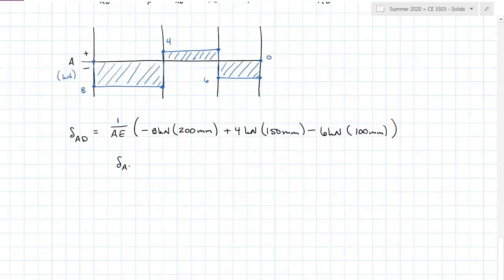My deflection A to D equals negative 1600 kilonewton millimeters all over my area and modulus of elasticity. My area is pi over 4 times 15 millimeters squared—the cross-sectional area perpendicular to that axial force. My modulus of elasticity is 200 gigapascals. You'll find that a gigapascal equals a kilonewton per millimeter squared. With all my units being in kilonewtons and millimeters, they'll all cancel out and leave me with millimeters for my deflection from A to D.